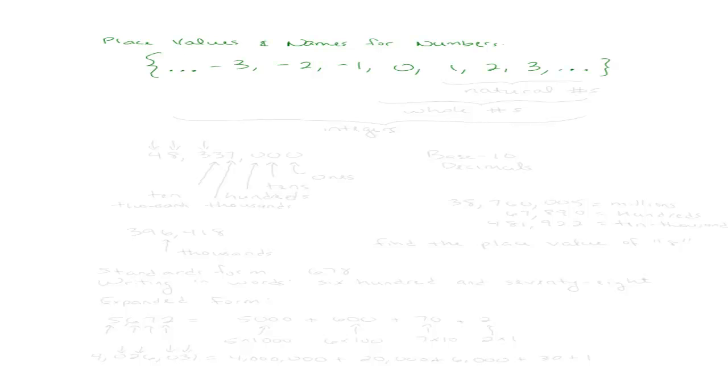And the dots on each side, the ellipsis, they mean that this set goes on forever. So I am talking about all the set of negative numbers, zero,